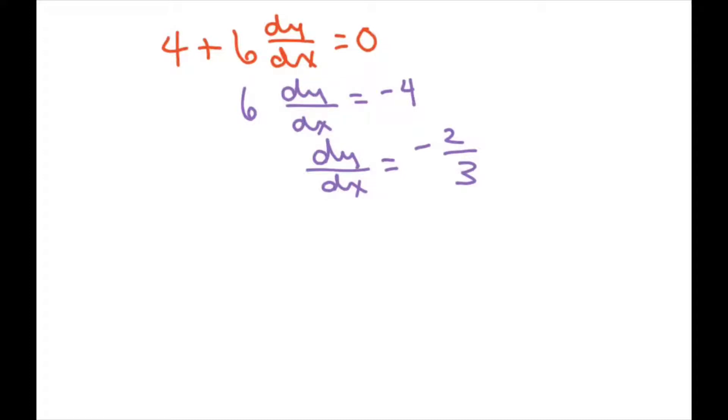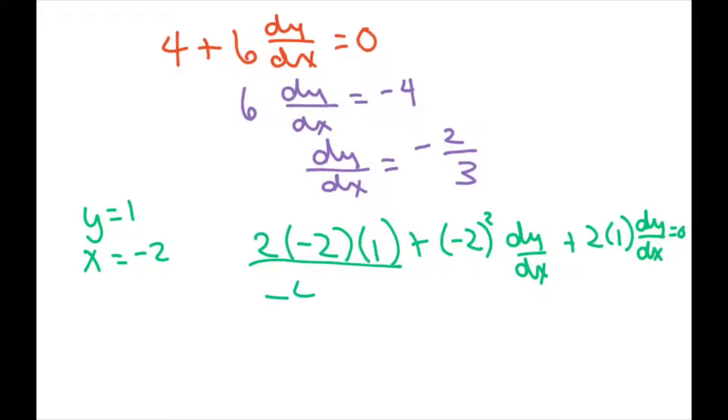And then we have to check when y is 1 and x is negative 2. So plug that in. You get 2(-2)(1) + (-2)² dy/dx + 2(1) dy/dx = 0. So this is -4, and when you simplify this, you're going to get -4 + 4 dy/dx + 2 dy/dx.